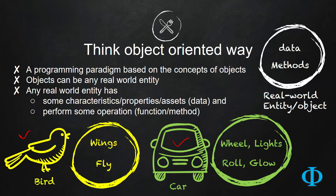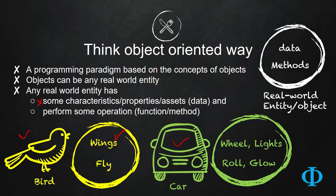If you take a look at all these real-world entities or real-world objects, you will find that all these objects have two different parts. The first one is that these objects have some characteristics, or some properties, or some attributes. For example, a bird object has wings, a car object has wheels and lights. In the programming context, these things are called data.